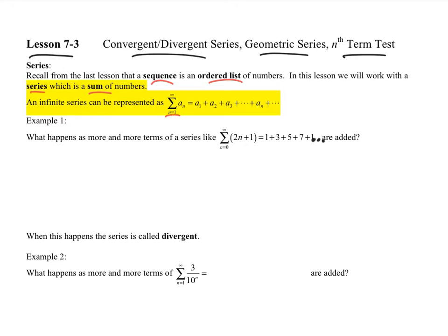So we have what we call here summation notation or sigma notation, which you should be familiar with. But as a review, we're going to start with the first term, n equal to 1, and go all the way up to the infinite term of my a sub n's.